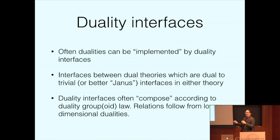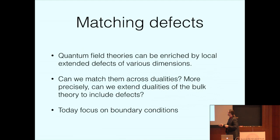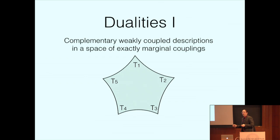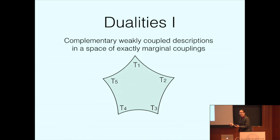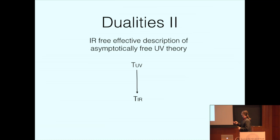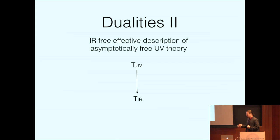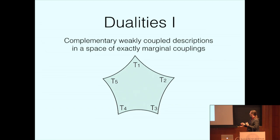A way to think about duality interfaces is that they are interfaces between dual pairs of theories which are themselves dual to the trivial interface—or more precisely, to a Janus interface, where the couplings vary across space. For example, you can let the marginal coupling vary as a function of position so half the spacetime is well-described by one theory and the other half by the dual theory. In between, you find the duality interface. Similarly, you can make the RG scale a function of position.